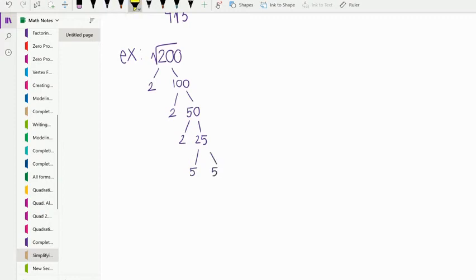All of these are prime numbers. I'm looking for pairs. I have a pair of 2s, a pair of 5s, and then a lonely 2. So I take that pair of 2 times the pair of 5s, and then the lonely 2, and I get 10 root 2.